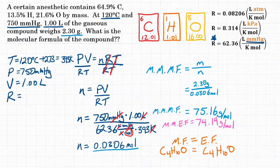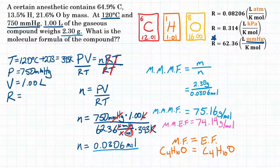If you want to see a different example where the empirical formula is not the same as the molecular formula, a card should pop up in the top right of your screen to take you to that video. The final answer: for a certain anesthetic containing 64.9% carbon, 13.5% hydrogen, and 21.6% oxygen by mass, at 120 degrees Celsius and 750 mmHg, where 1.00 liters weighs 2.30 grams — the molecular formula is C4H10O.